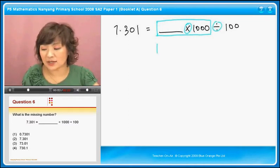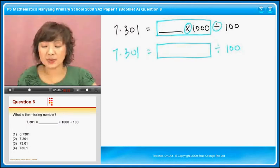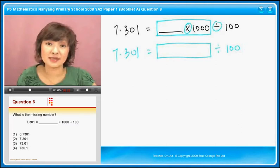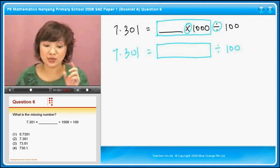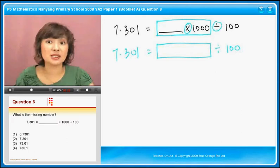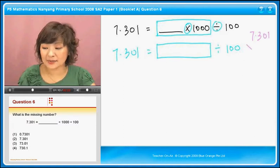divided by 100 that will give me 7.301. Should this number be bigger or smaller than 7.301? You have to take this number to divide by 100 to get 7.301. Of course, the number has to be bigger, right? So I will take 7.301 times 100.